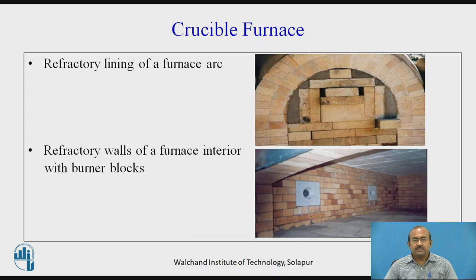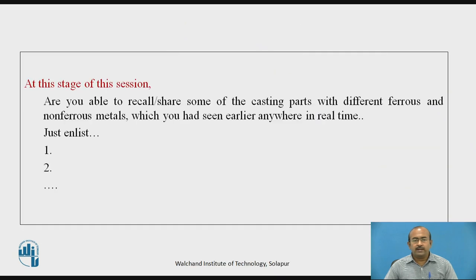A crucible furnace with refractory lining is shown in the image. Refractory walls of the furnace interior with burner blocks are also shown. Are you able to recall or share some casting parts made with different ferrous and non-ferrous metals which you had seen earlier in real life? Just enlist them.